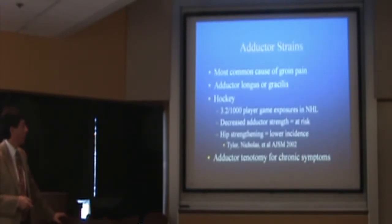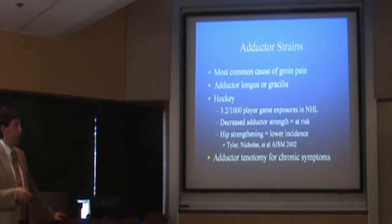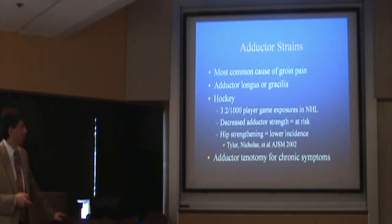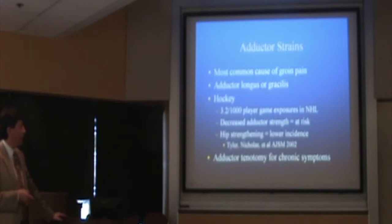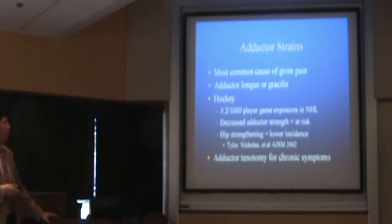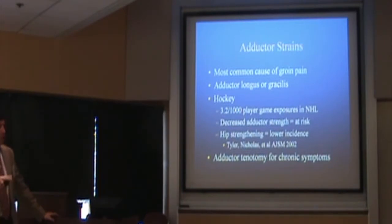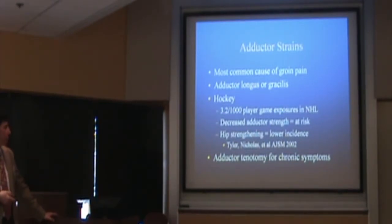The hip is pretty vague. Starting with adductor strains, which is the most common cause of groin pain in athletes. The injury occurs to either the adductor longus tendon or the gracilis tendon. It's a big problem in hockey — the NHL looked at the incidence: 3.2 adductor strains per 1,000 player game exposures. Research shows that if you compare adductor to abductor strength and there's an identifiable imbalance where the adductors are much weaker, that puts athletes at much greater risk.